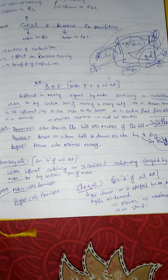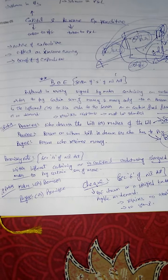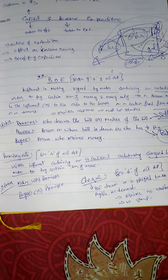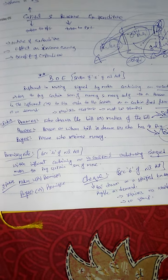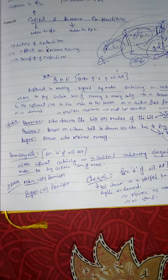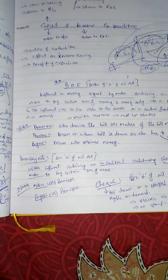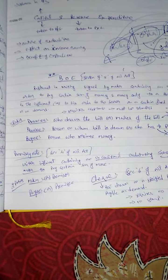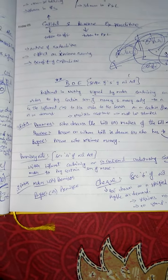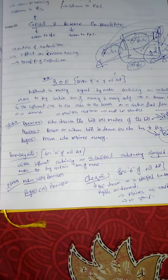The difference between bill of exchange and promissory note: Promissory note is defined under Section 4 of NI Act. There are only two parties to a promissory note: promissor and promisee, or maker and payee. The maker is the one who is promising to pay — the one undertaking to pay — that is, the promissor. The promisee is the one in whose favor the promise is given — the person receiving the amount — that is, the payee.